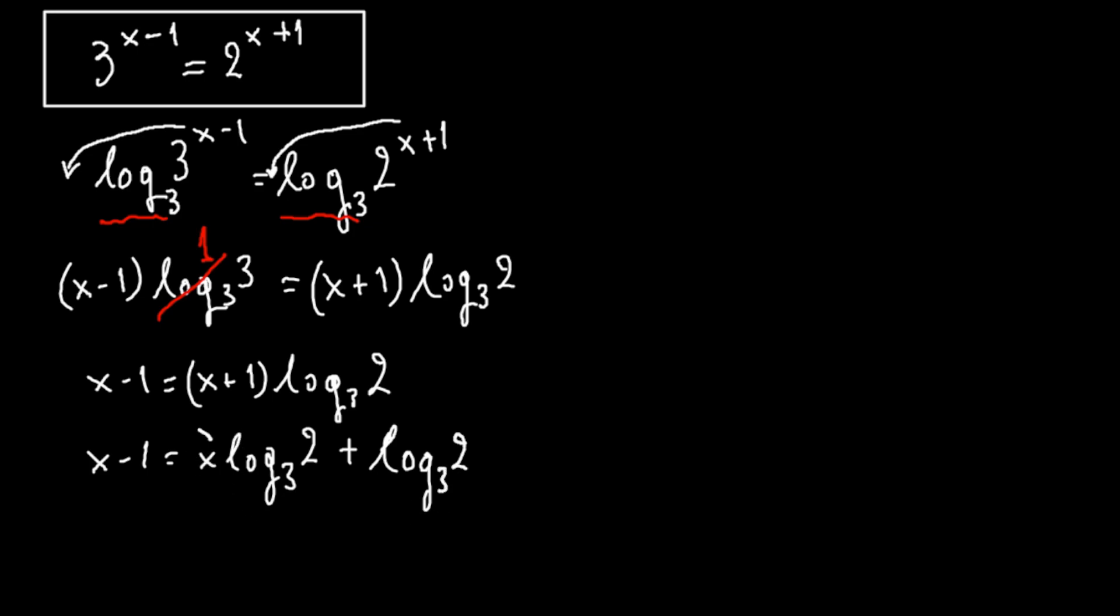We have x minus x plus 1. Take this on this side and this on this side. So we have x minus x log 2 with base of 3 equals to log 2 with base of 3 plus 1.